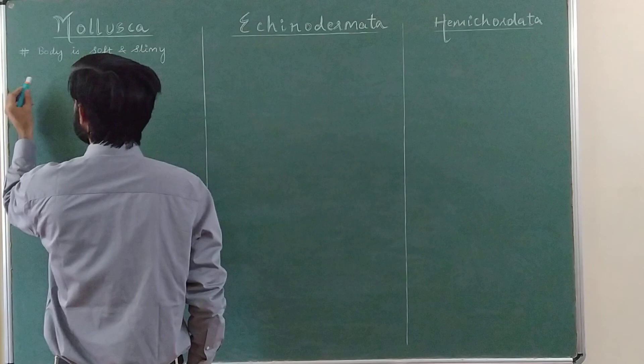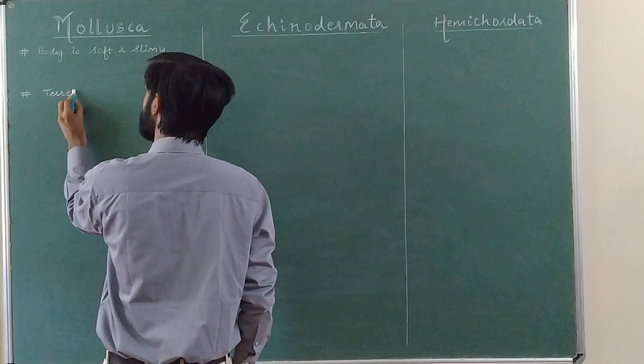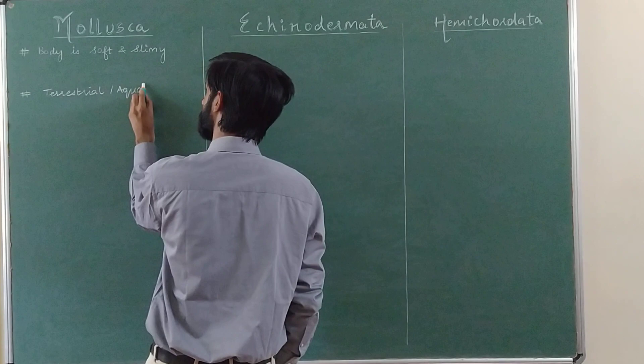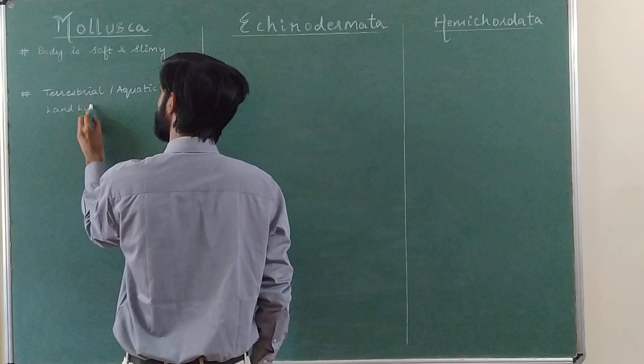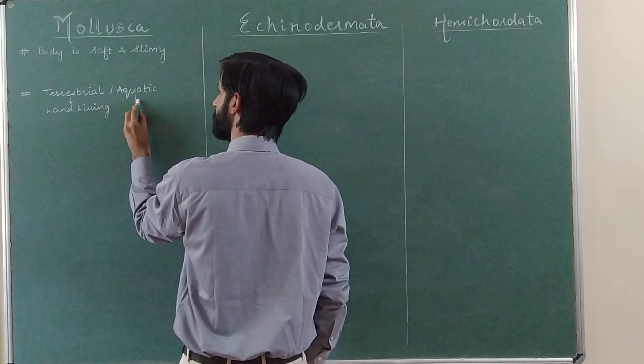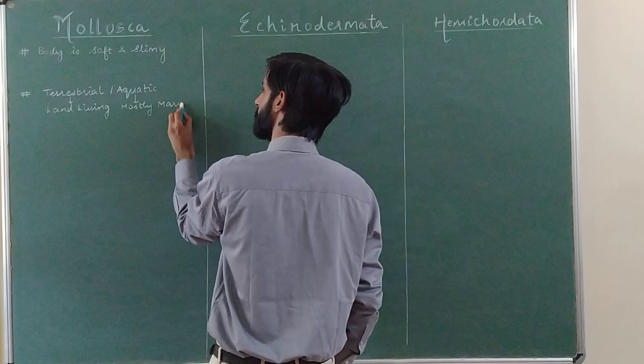If we look at where these animals are found, you will find them in terrestrial habitats — terrestrial means living on land — and also in aquatic habitats. In aquatic environments, they are mostly marine, meaning found in salt water. Very few of them are found in fresh water.